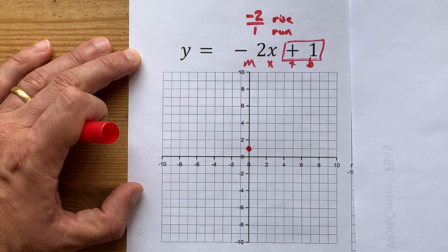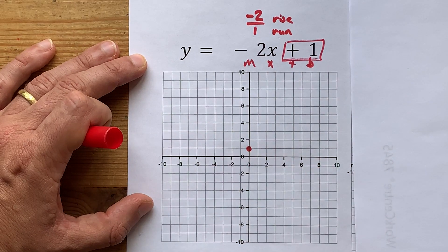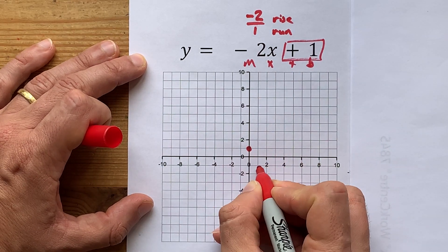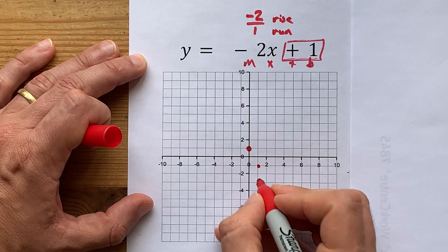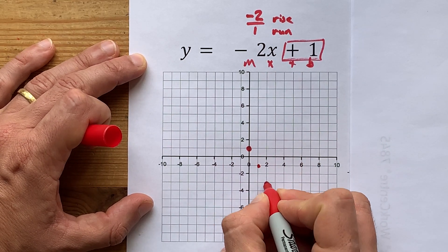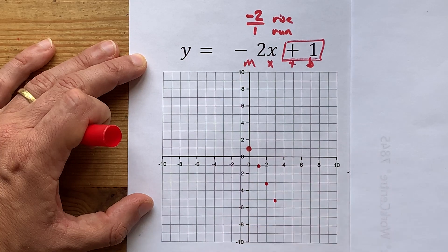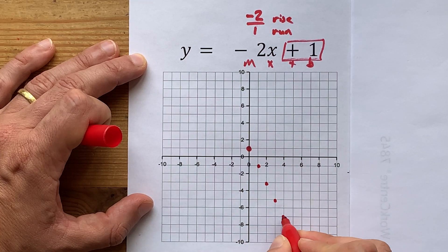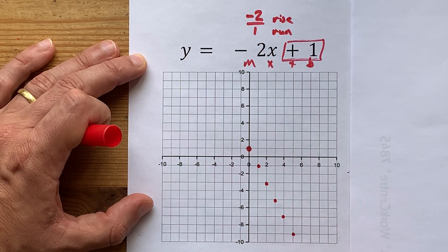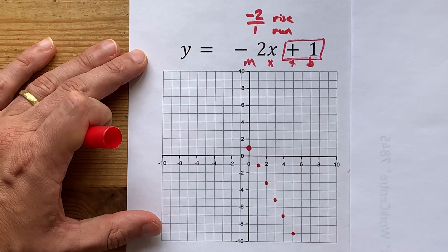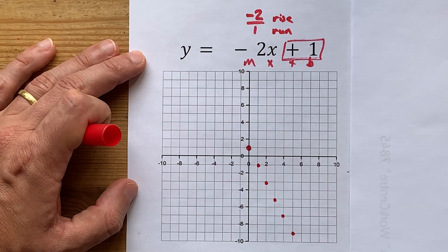That's the pattern. So from this dot that we've already put there, we repeat: down 2, right 1 — over and over until you run out of space or quit.